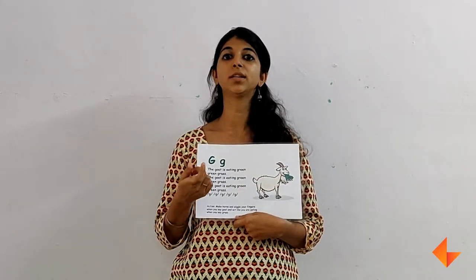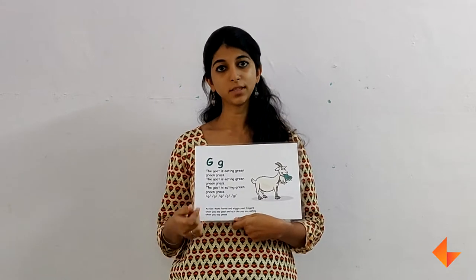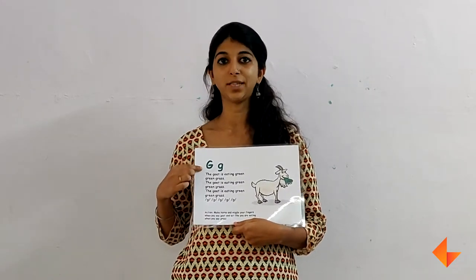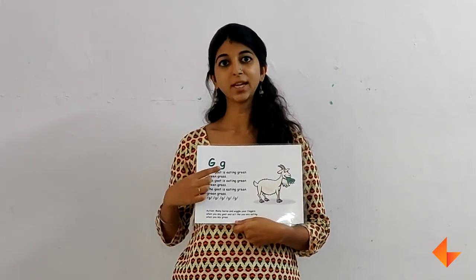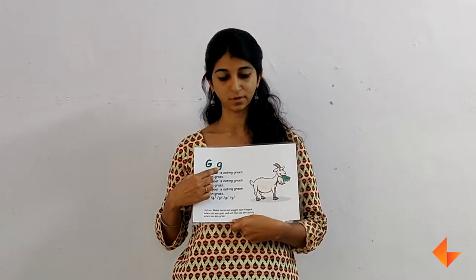We heard the sound G. The sound G is made by the alphabet G. This is capital G and this is small g.